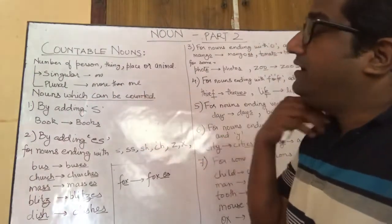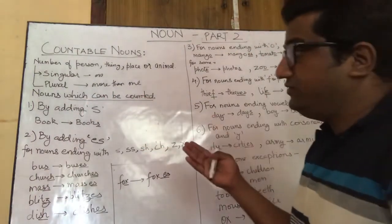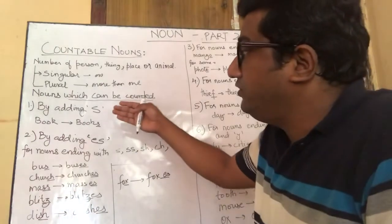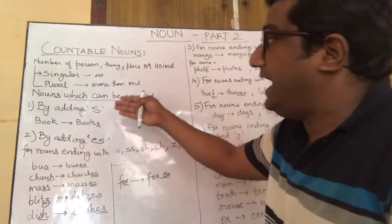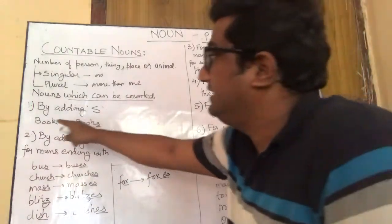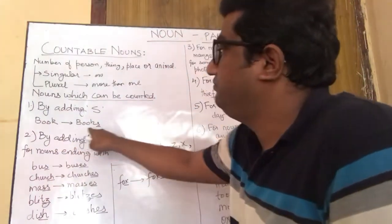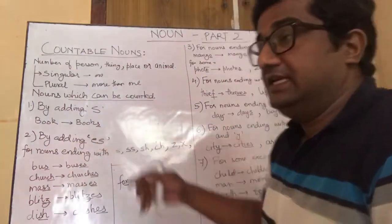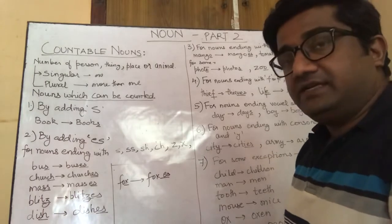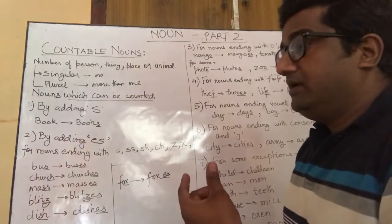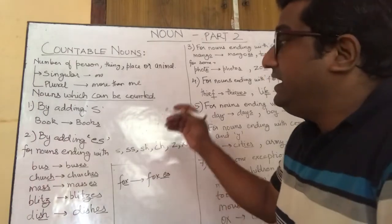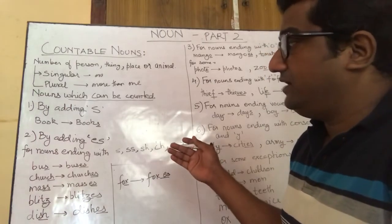For most nouns, you can convert them into plural form by simply adding S. For example, book becomes books, table becomes tables, chair becomes chairs, pen becomes pens.